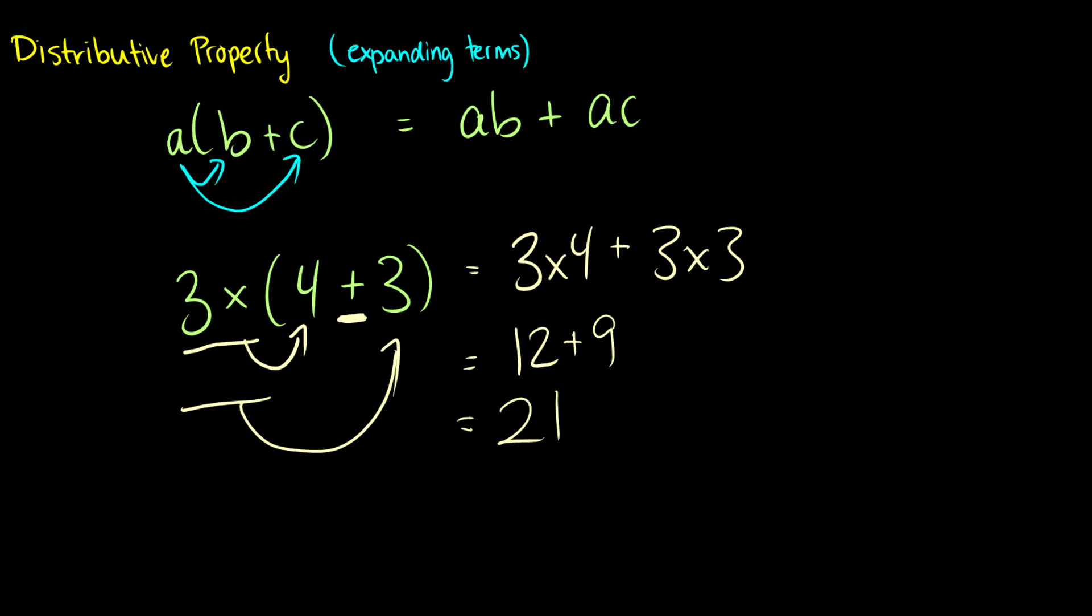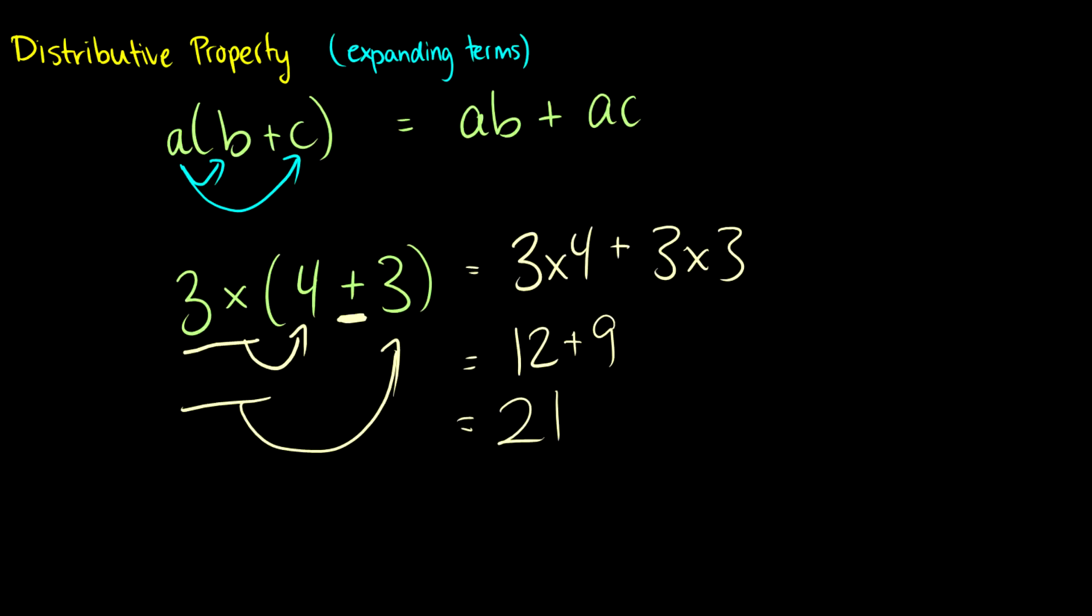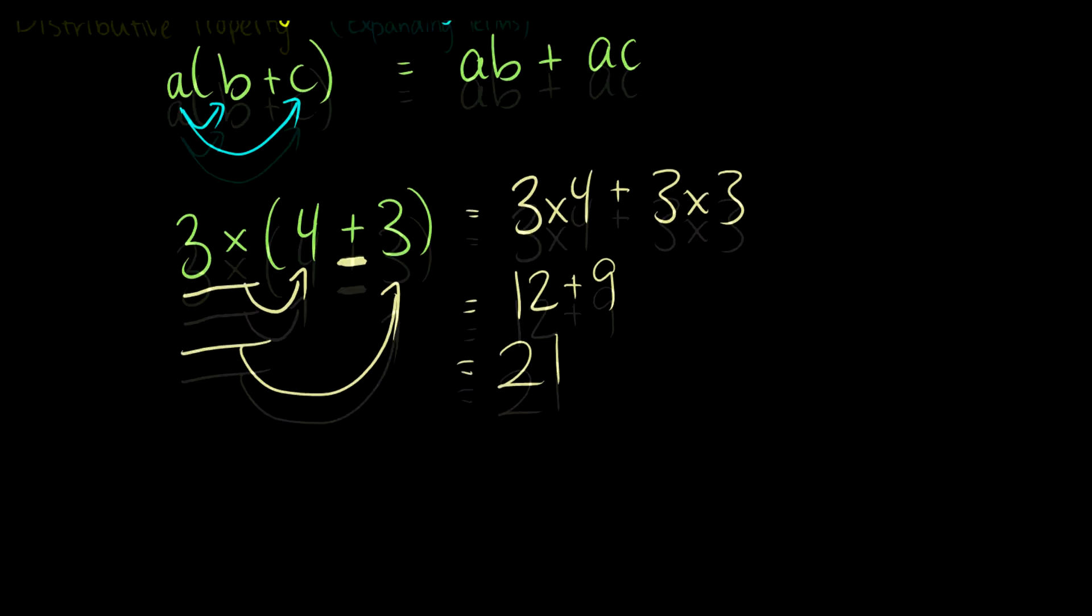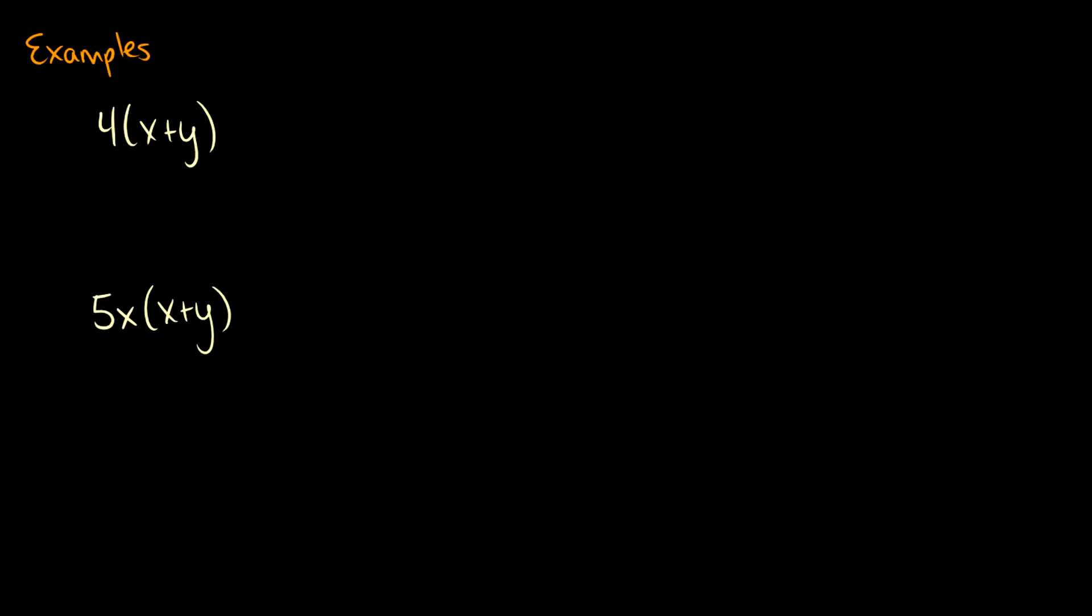So we'll do some more examples here. In fact, we're going to start using variables now because, well, let's take a look at this previous example. Three times four plus three. Why would I ever do that? Why not simplify and just say three times seven? And then we can say, yeah, that's 21. That makes much more sense just to do the addition first, and then multiply. Why would you distribute otherwise? Well, when we have variables, we have to.